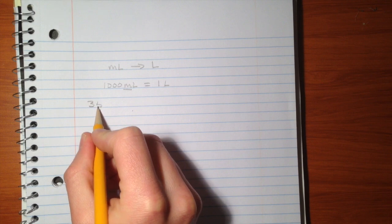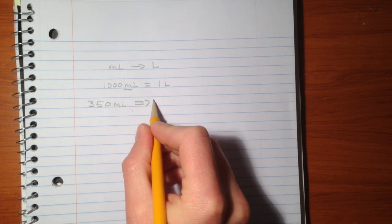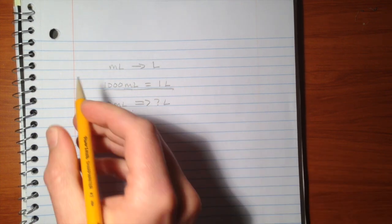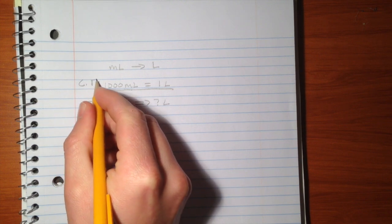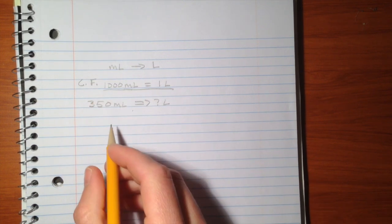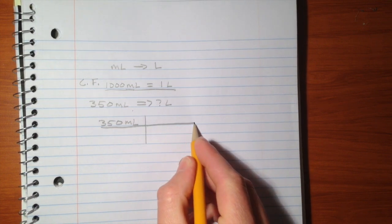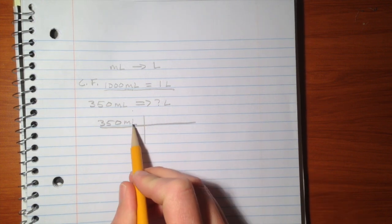We want to convert 350 milliliters to liters. To do this, we use this conversion factor. We take our 350 milliliters and set it up in a manner like this. We have 350 milliliters in the numerator.